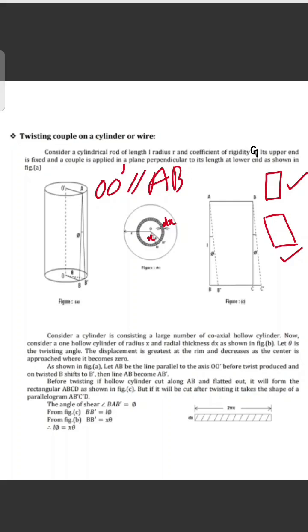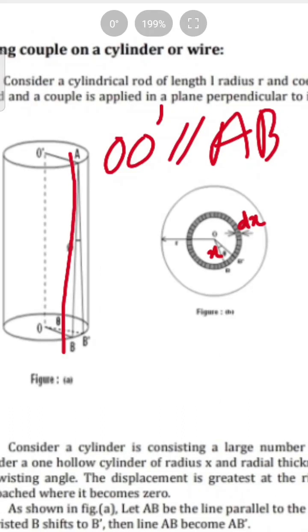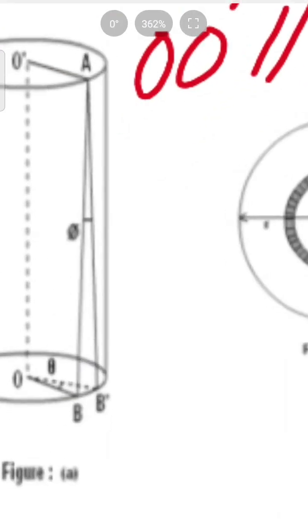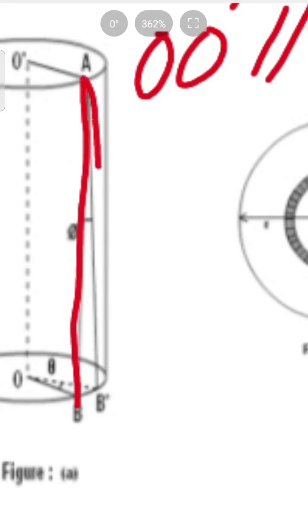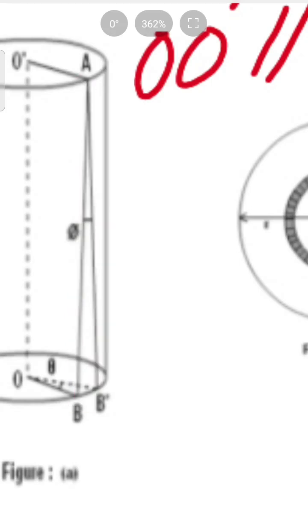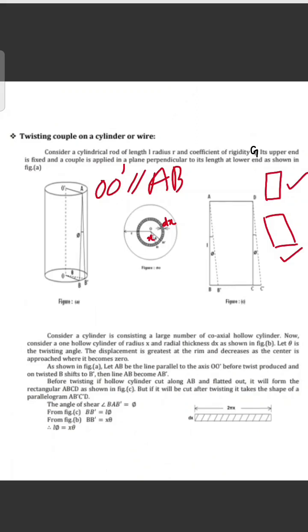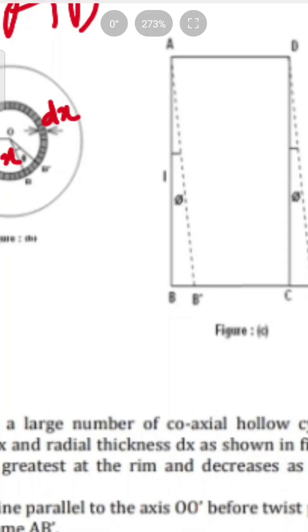The angle of shear is the angle BAB', which is equal to phi. From figure C, BB' is equal to phi. The angle of shear is equal to phi, and the length is L.